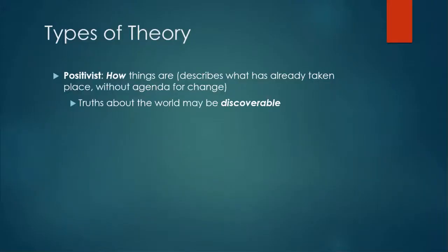Every field of study at the university will have many theories associated with it. But many of these theories can fall within three broad categories. The first of these is positivism — positivist theories that describe how things are, or describe what has already taken place. Such studies don't have an agenda for change; they simply want to describe a phenomenon.